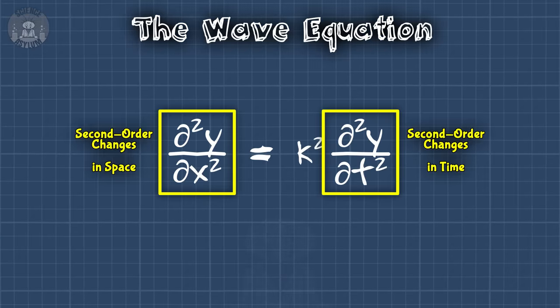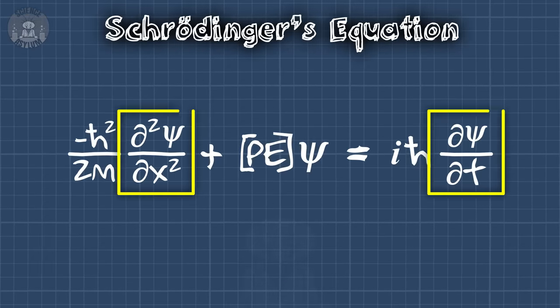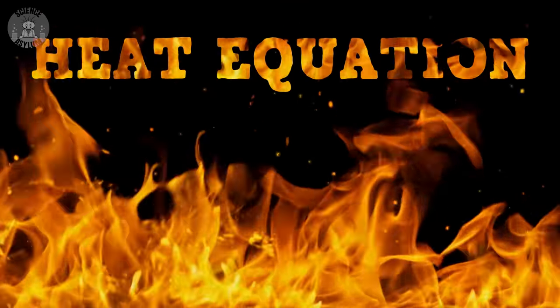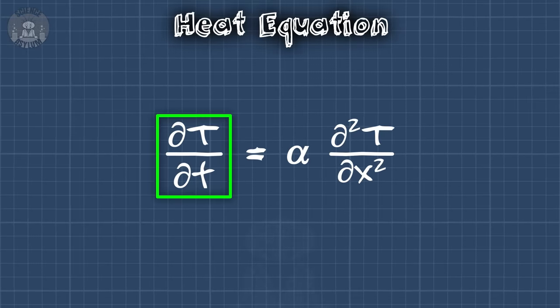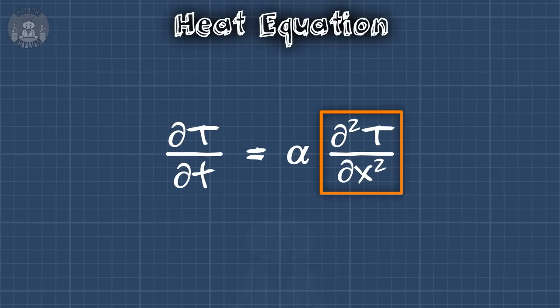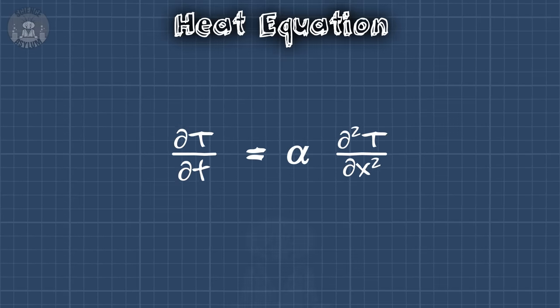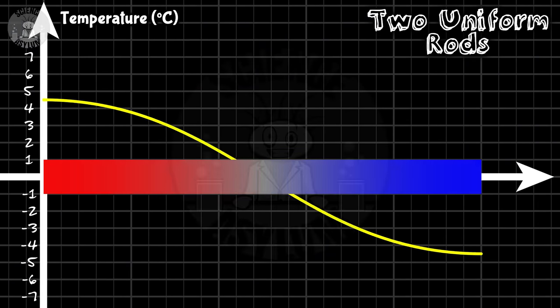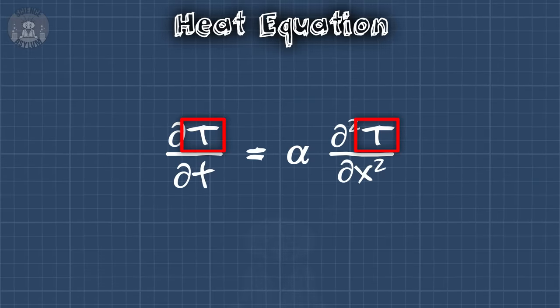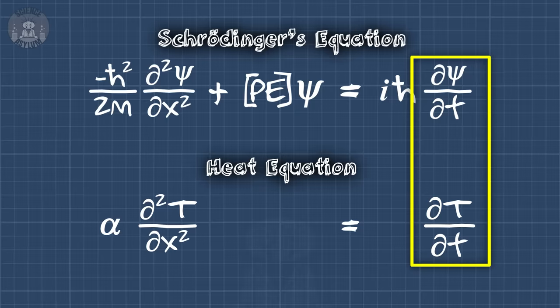Wave equations have second order changes in both space and time. Schrödinger's equation has second order changes in space, but only first order changes in time. So what is it then? It's a heat equation. The heat equation relates changes in temperature over time at a particular location to differences in temperature between nearby locations. The bigger the difference, the faster the change, and vice versa. It tells us how we'd expect heat to flow inside of a solid body. But just like the wave equation, it's not limited to its original purpose — this quantity doesn't have to be temperature; it could really be anything that flows. And it's a first order change in time, just like Schrödinger's equation. What flows in quantum mechanics?